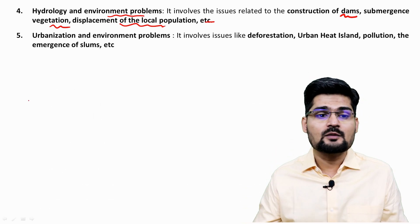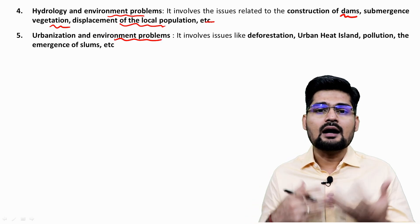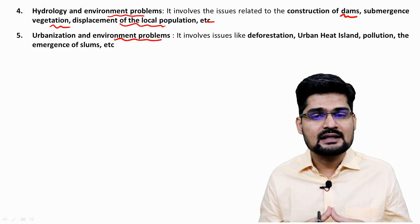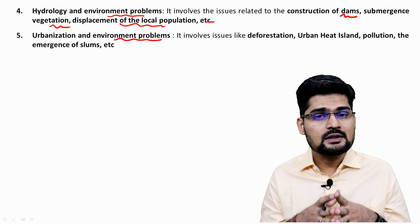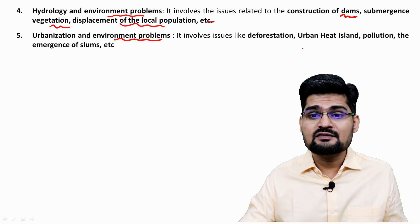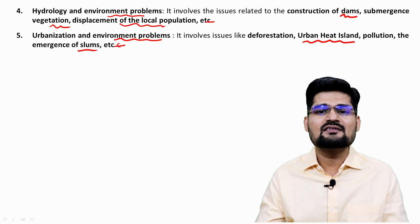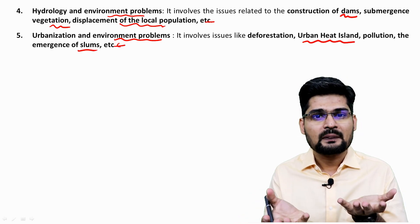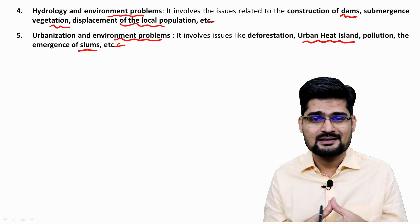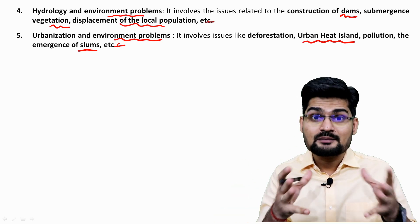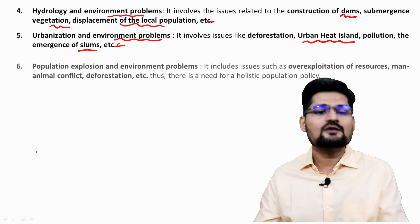Urbanization and environmental problems are the fifth area. Being urban is the direction today's world is heading towards, but at what cost? Deforestation, urban heat islands, pollution, and the emergence of slums are related to it. This is the flip side — the darker side — of urbanization, and it's a major challenge for regional development policy planners.